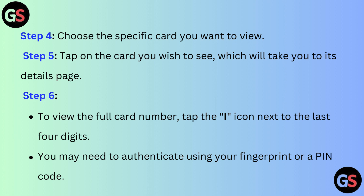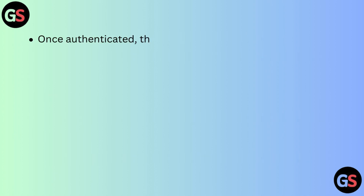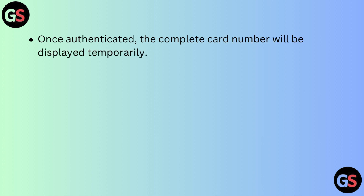Step 6: To view the full card number, tap the eye icon next to the last 4 digits. You may need to authenticate using your fingerprint or a PIN code. Once authenticated, the complete card number will be displayed temporarily.